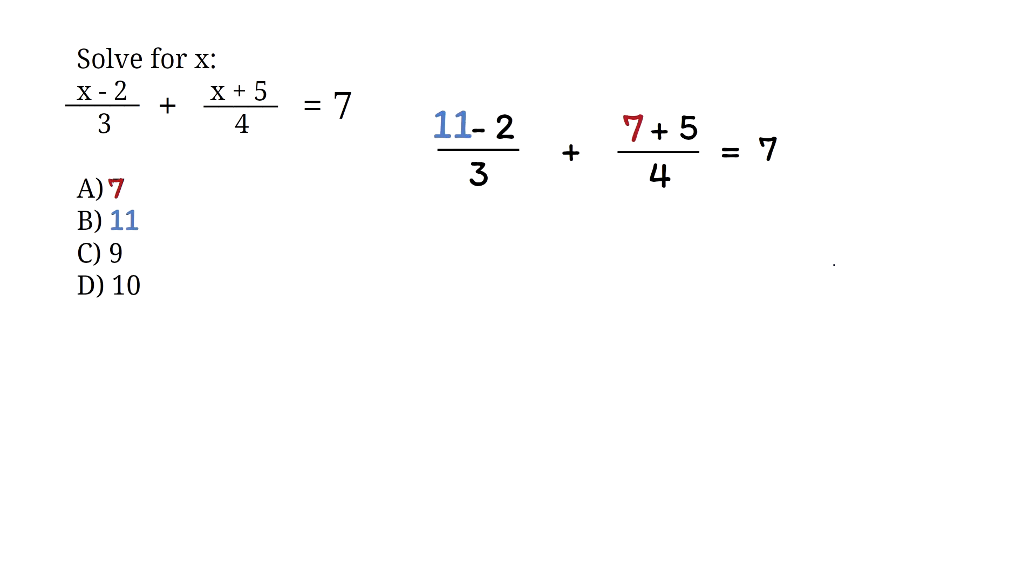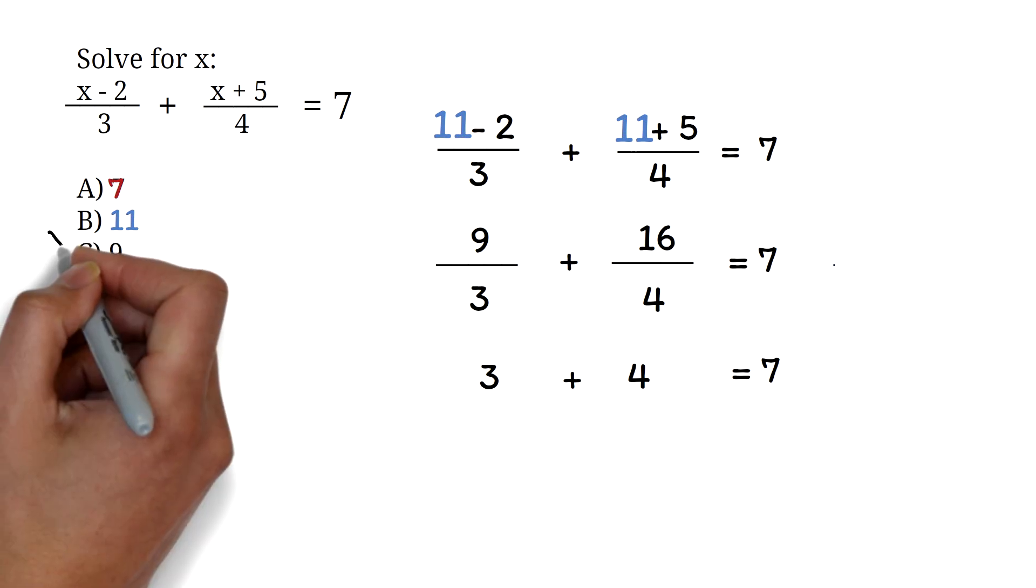We can try option B. We have 11 minus 2, which is 9. Then we have 11 plus 5, which is 16. We have 9 over 3 plus 16 over 4. We add this on the calculator to get 7. We could easily do this without a calculator also. 9 divided by 3 is 3. 16 divided by 4 is 4. Add the 3 and the 4 to get 7. Since we had 7, which is the expected answer, option B is the correct answer.